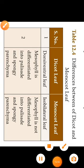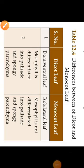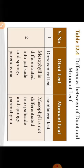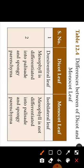Dorsiventral leaf means both sides of the leaf show different characters. Isobilateral leaf means both sides look the same.